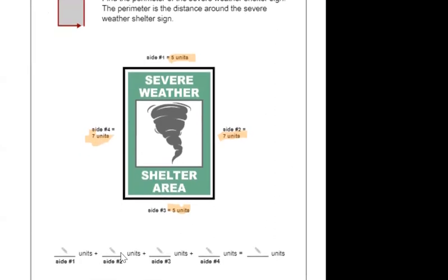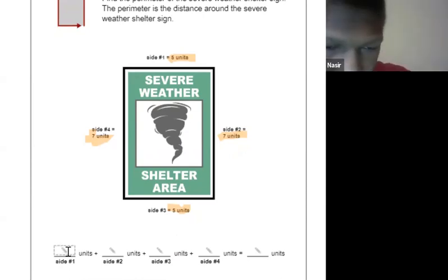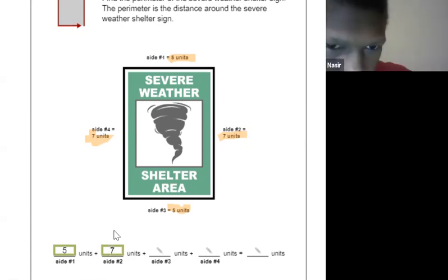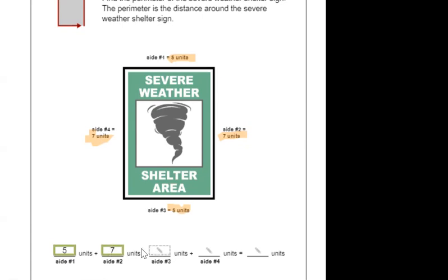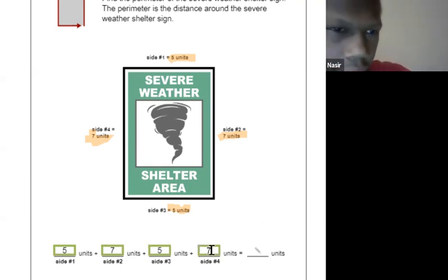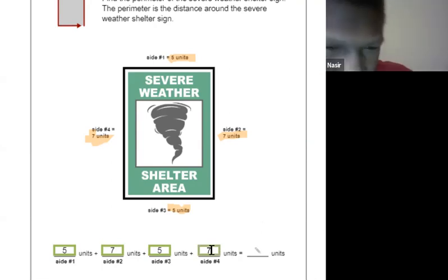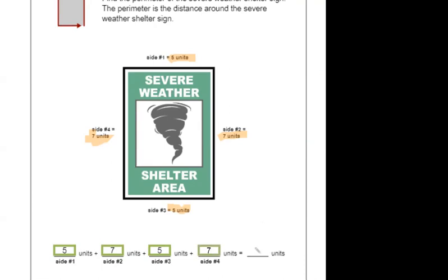Side number one was five, side number two is seven, side number three is five, and side number four is seven. All right, so to get perimeter, what do we do to those numbers? Add them all up. So go ahead and add them all up and let me know what you get.